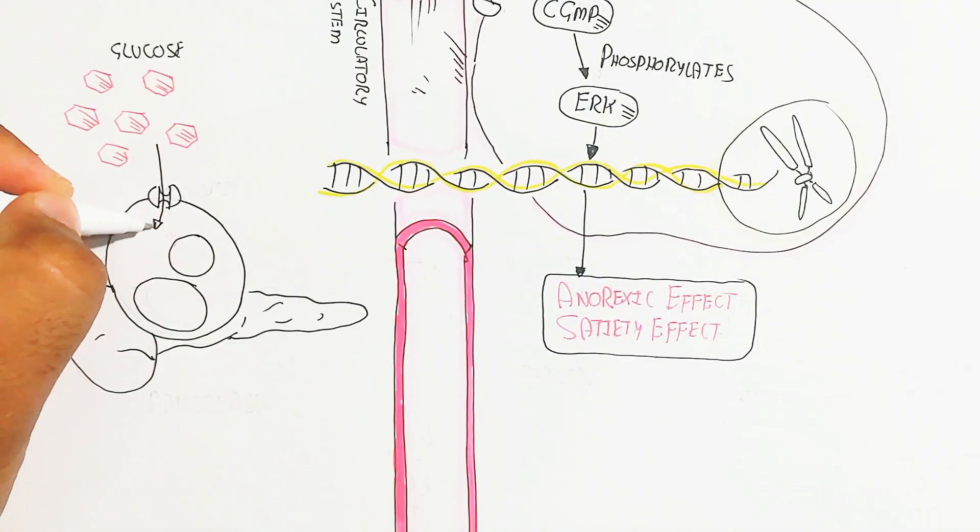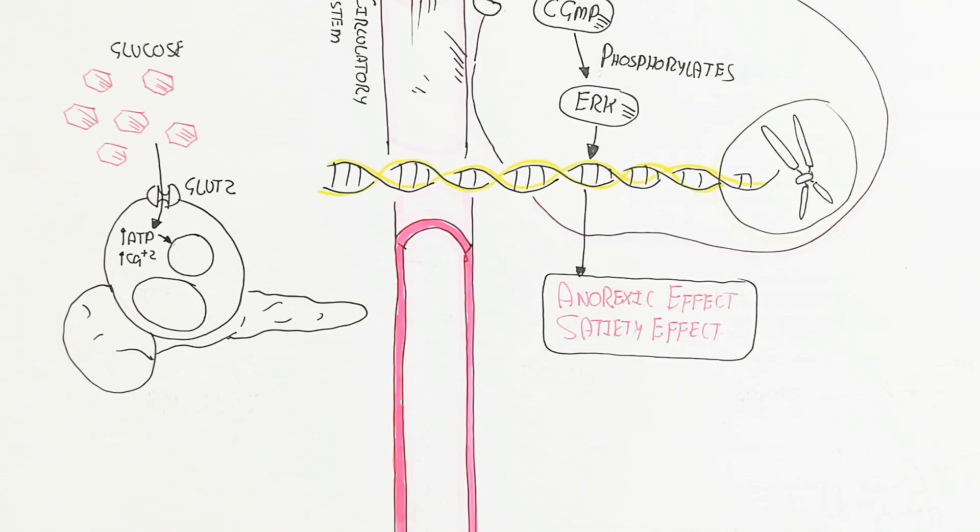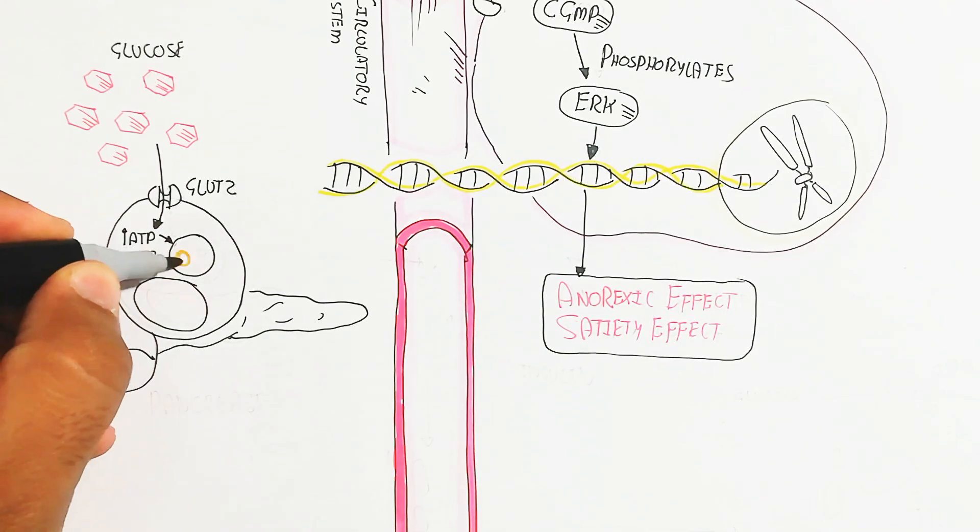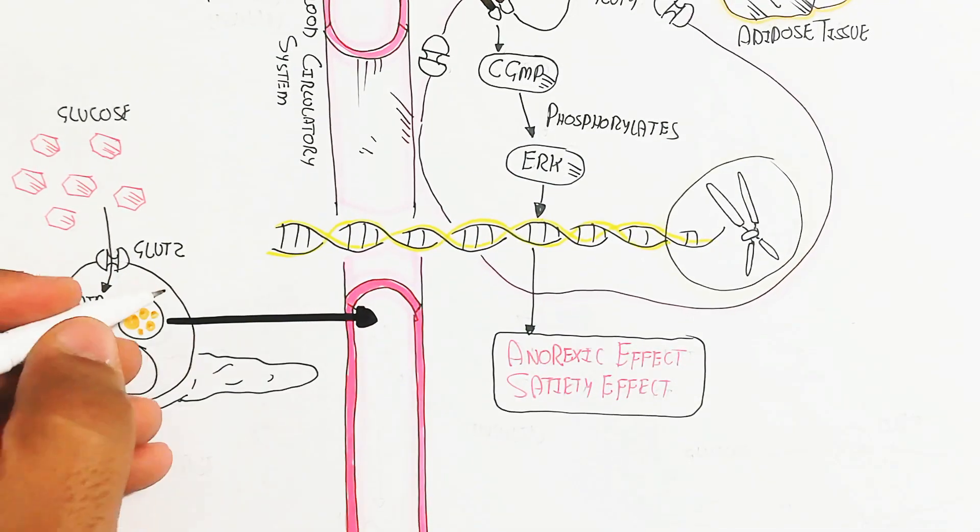When glucose moves into the pancreatic beta cell through the GLUT2 channel, it leads to increased glycolysis, the Krebs cycle, and electron transport chain, increasing ATP and calcium influx.